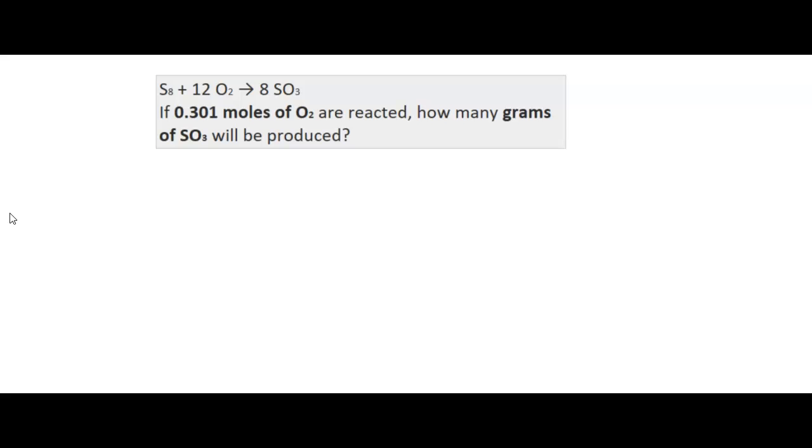So in this problem, we are going from moles of O2 to grams of SO3. We have moles of one compound to grams of a different compound. We can't use the molar mass directly because O2 and SO3 are two different things. We're going to have to worry about the balanced equation because the balanced equation is the only thing that is going to get us from one compound to a different compound.